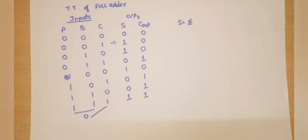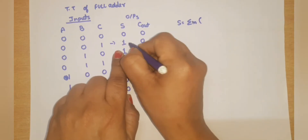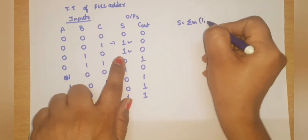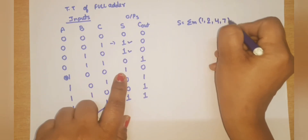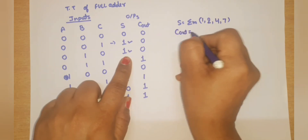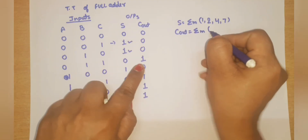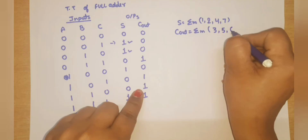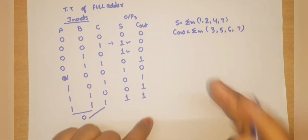From the truth table, the function for Sum S is equal to the summation of minterms: Σm(1, 2, 4, 7). For C_out, the function is Σm(3, 5, 6, 7). Now I will draw the K-map.